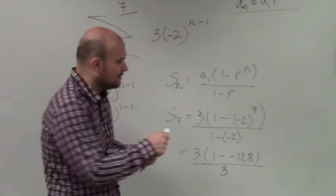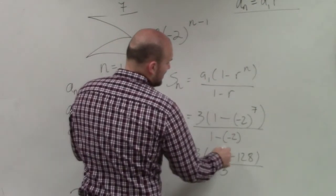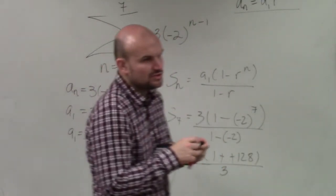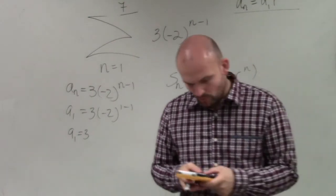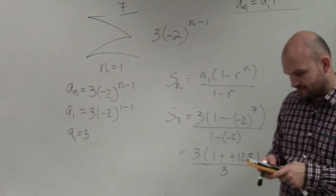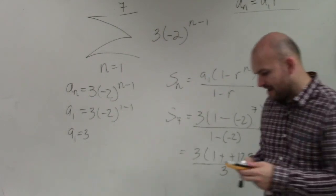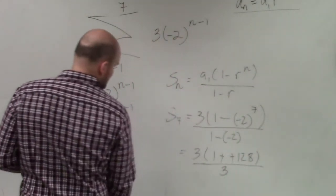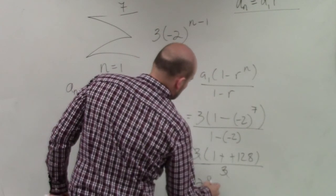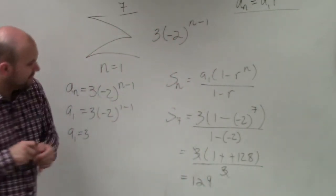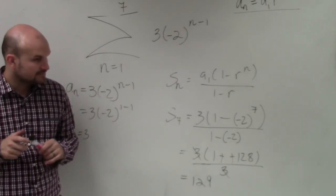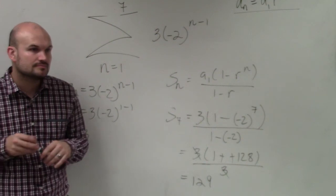So 1 minus negative 128 is going to give you a positive. So 1 plus 128 is 129. So 129 times 3 is 387. Divide by 3 is 129. Actually, you could say the 3s divide out. So therefore we could have that it would be 129 would be your final sum.